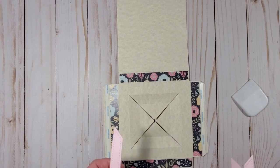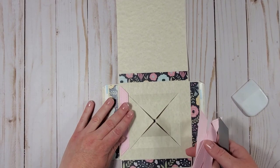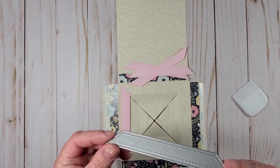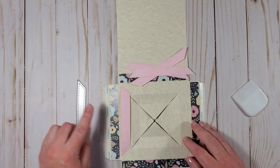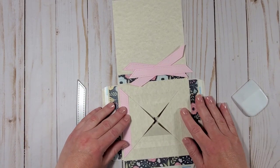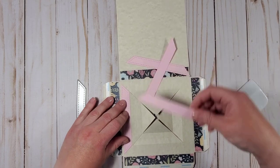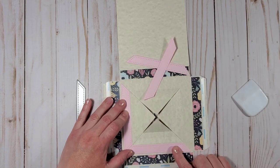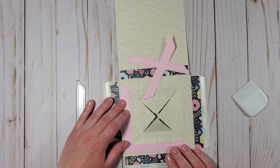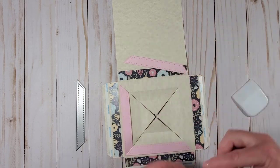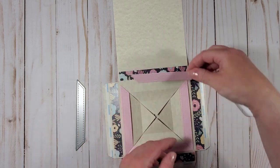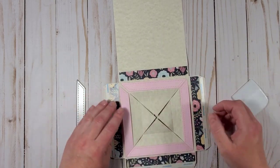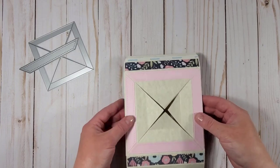I decided to use this die which is called Build a Frame Stitched Large Die and I'm using the smaller of the two. So I cut four pieces of pink cardstock and I will glue these down to the base of my shadow box like this and it's done too.